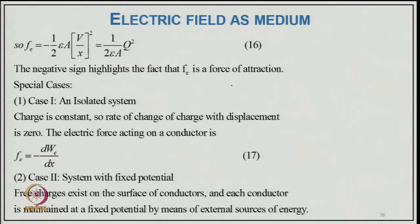The electric force f_e becomes ½εAV²/x² = ½(2ε/A)·q². The negative sign highlights that f_e is a force of attraction. For an isolated system, the rate of change of charge with displacement is zero, and the electric force on a conductor is F = −dW_e/dx. For a system with fixed potential, free charge exists on the surface of conductors and each conductor is maintained at a fixed potential by means of actual energy sources.